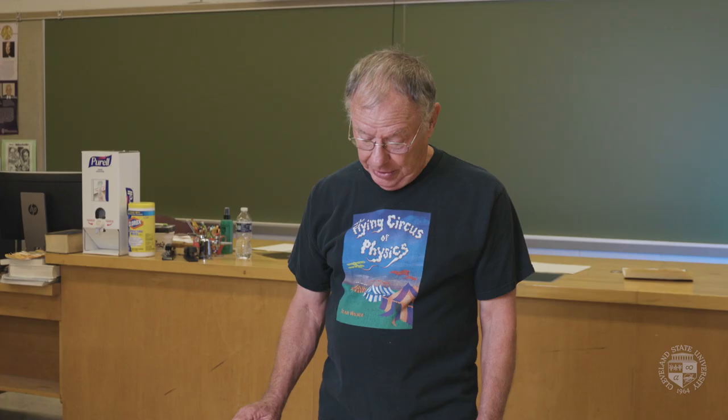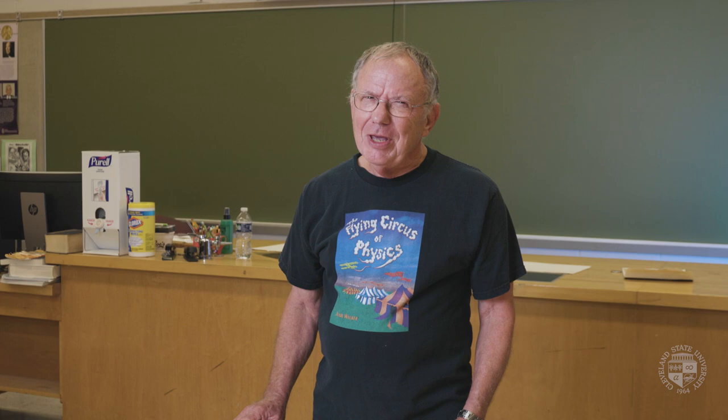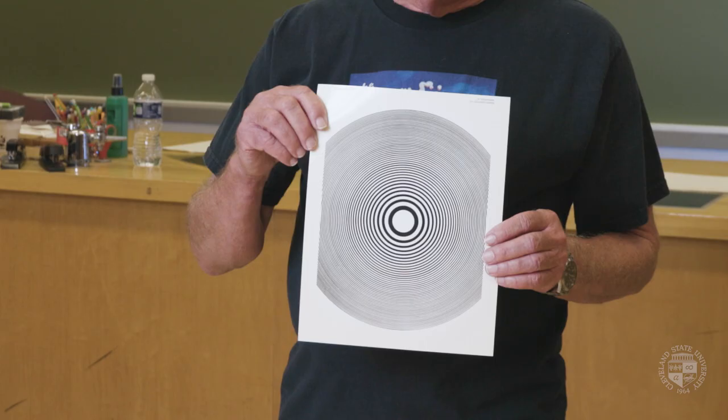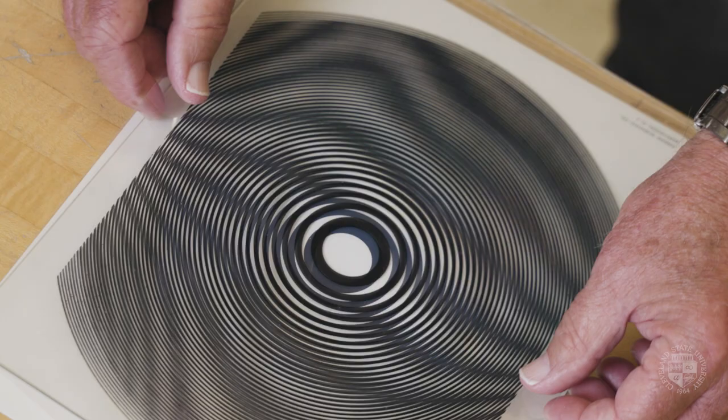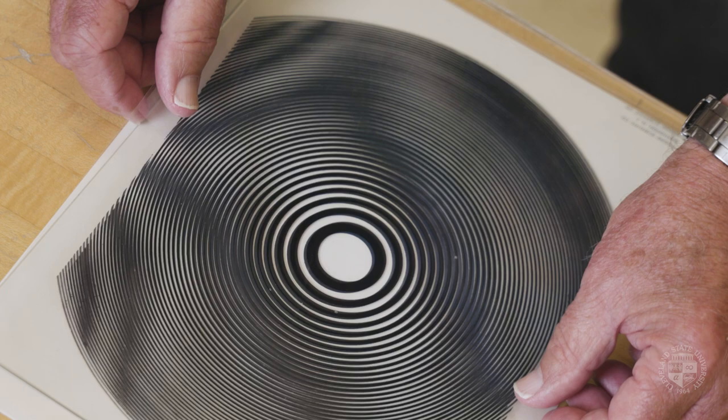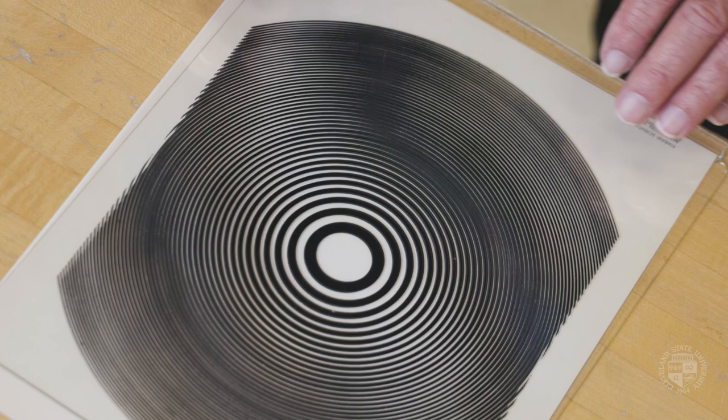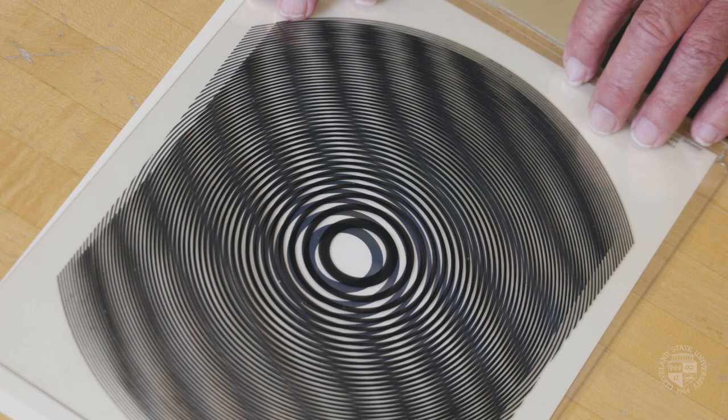I want to show you something that you've seen your entire life, but maybe didn't pay much attention to. I've got some dark circles here, and some more dark circles. I'm going to lay this set of dark circles down on the other set — and what do I get? I get dark circles. Now watch: I'm going to move the top layer slightly, either rotating or displacing left or right or up and down, and you get a moiré pattern.